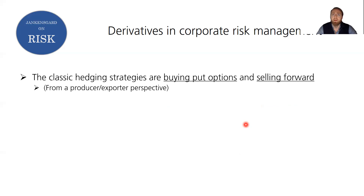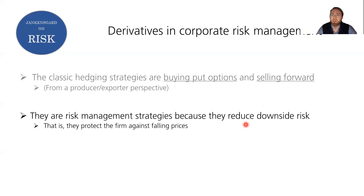If you're a producer or exporter, the classic hedging strategies are to either buy put options to establish a floor for your performance below which it cannot go, or to sell forward. Your product price or exchange rate can be locked in through a forward contract. These are referred to as risk management strategies because they reduce or eliminate downside risk and protect you against a fall in the price of your products or the exchange rate you're exposed to.